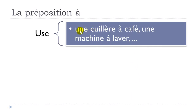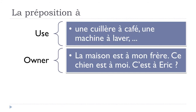À is also used to distinguish between types of objects. For example: 'une cuillère à café' (a coffee spoon / teaspoon), 'une machine à laver' (a washing machine). The preposition À here specifies the purpose or use of the object.